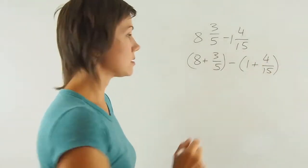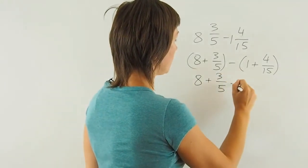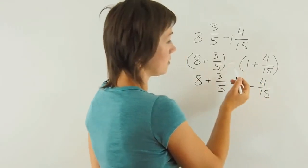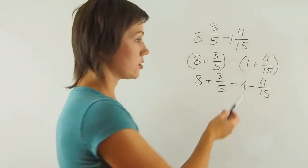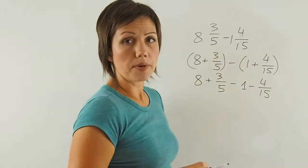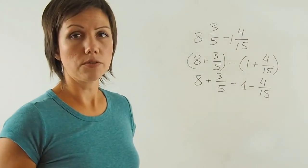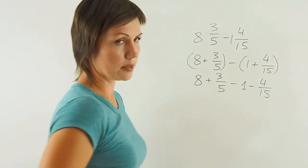Next, I'll drop the brackets. 8 plus 3 fifths minus 1 minus 4 fifteenths. Remember, when you have a negative in front of the whole bracket, if there is an expression that is the sum, then each member of that expression or each term is changing its sign to the opposite. They both become negative.